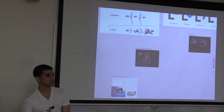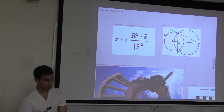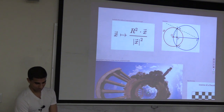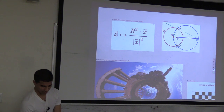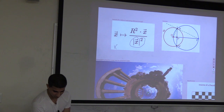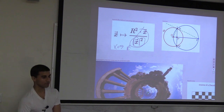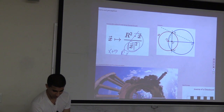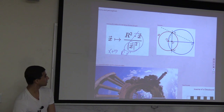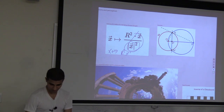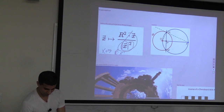With one more operation - inversion - you get all conformal transformations. Inversion corresponds to x → r²·x-inverse. The inverse of something, since it's a product, means A-inverse times A should equal the unit scalar 1.